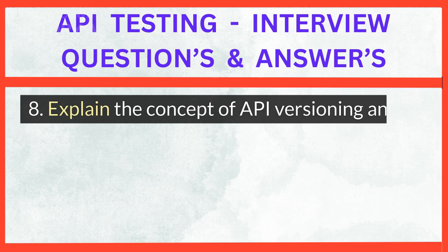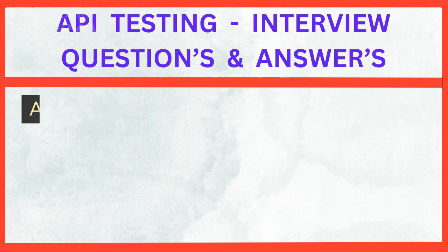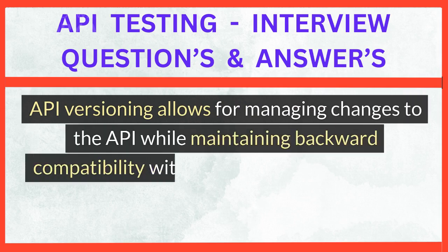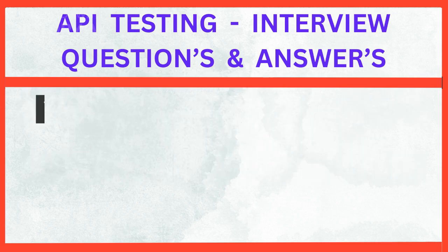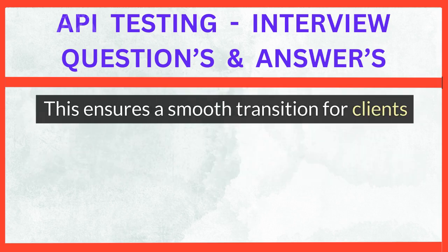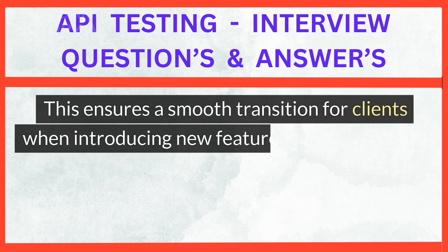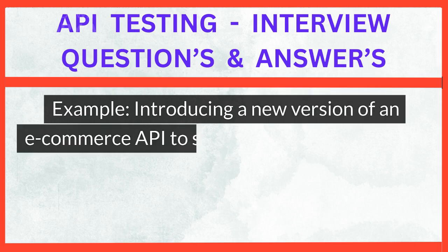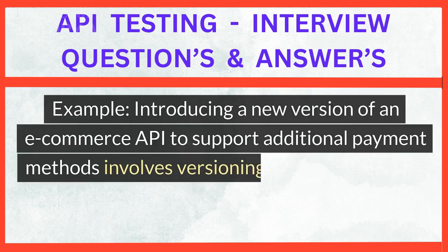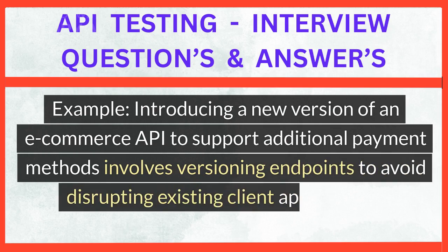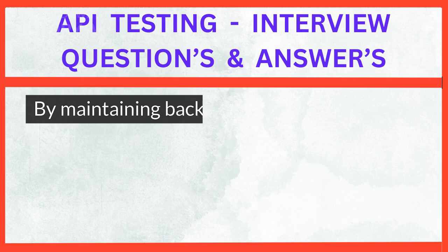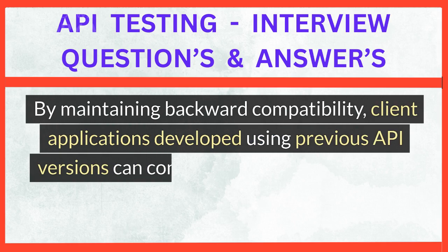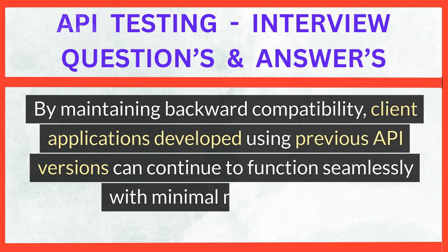Explain the concept of API versioning and its importance. API versioning allows for managing changes to the API while maintaining backward compatibility with existing client applications. This ensures a smooth transition for clients when introducing new features or modifications. By maintaining backward compatibility, client applications developed using previous API versions can continue to function seamlessly with minimal modifications.